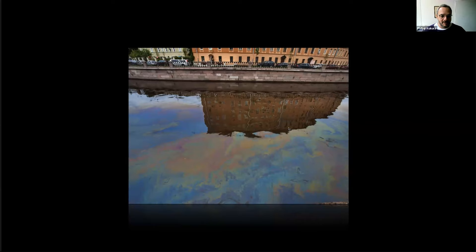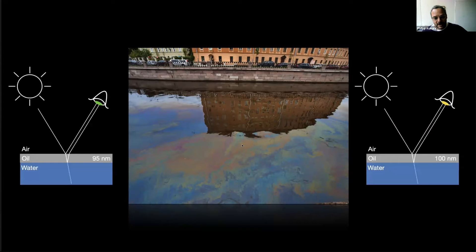You've probably all seen this: light from the sun hits the interface of water and oil, you get two reflections — one from the oil-air interface and another from the water-oil interface — and depending on the thickness of that oil layer you get a different color because of constructive and destructive interference. If the oil layer is 95 nanometers thick it will look green; if it's 100 nanometers thick it will look yellow. So even using the sun as a light source and your eye as a detector, you can clearly see changes on the size scale of a single protein — five nanometers.